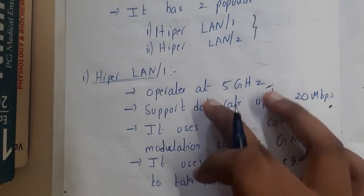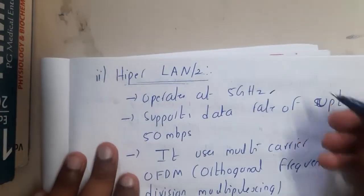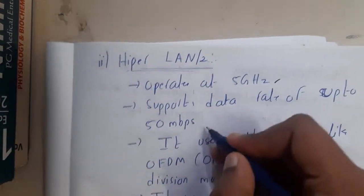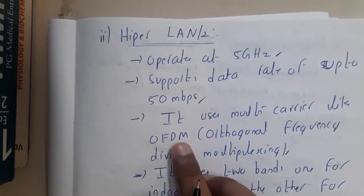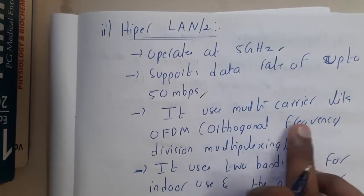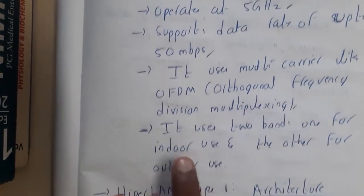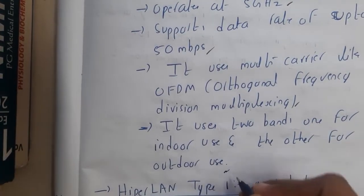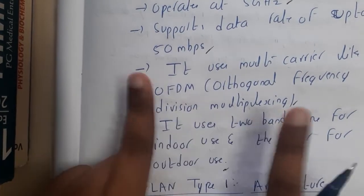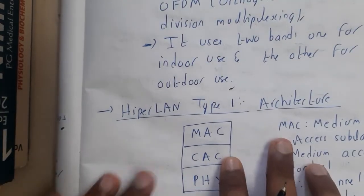HiperLAN 2 also operates at 5 GHz but supports speeds up to 54 Mbps. It supports multi-carrier OFDM modulation and uses two bands — one for indoor and the other for outdoor environments.